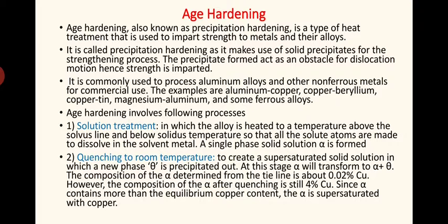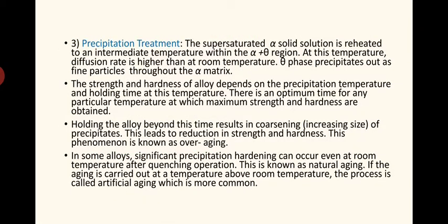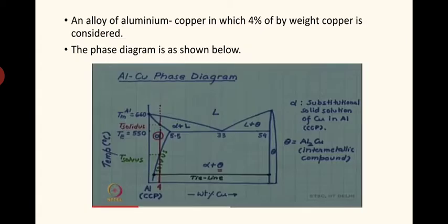Age hardening involves basically three processes: first is solution treatment, second is quenching at room temperature, and the third is precipitation treatment. Before doing all these things we must have a basic idea about the phase diagram of the aluminum-copper alloy. I will explain this process with the help of aluminum-copper alloy with four weight percent copper added in aluminum.